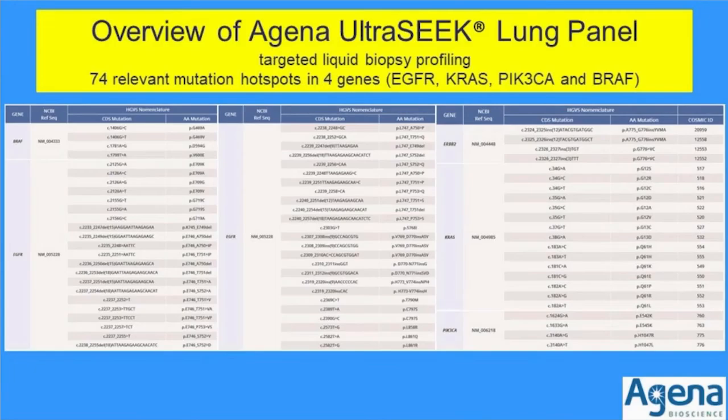For today I will focus mostly on one assay — a new technology, which is the validation of the Agena MassArray-based UltraSeq lung panel. This is just an overview of the mutations detectable by the Agena UltraSeq lung panel. The assay detects 74 relevant mutations in four genes: EGFR, KRAS, PIK3CA, and BRAF — the four genes commonly found in lung cancer.